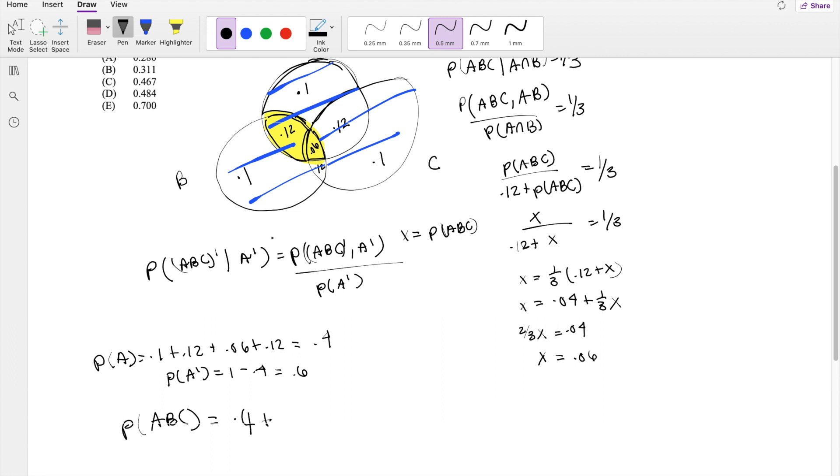Plus this right here, 0.1, plus 0.1, plus this part right here, 0.12. So that's equal to 0.72. So not A, B, and C would just be equal to 1 minus 0.72, which equals 0.28.